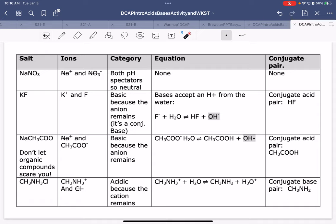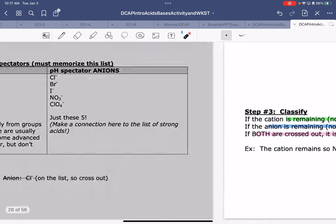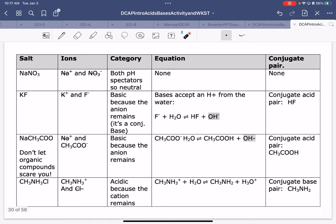KF. K is marked out when I go back to, remember, I'm going to go back to this list over here. There's K right there. I mark out K. F remains, because it wasn't on the list. Because the anion remains, it's a conjugate base. My conjugate pair is HF. So, F- plus H2O produces HF plus OH-.